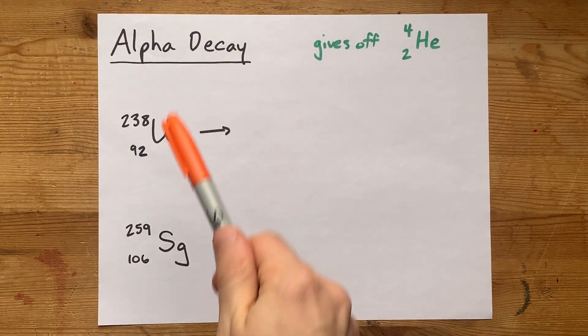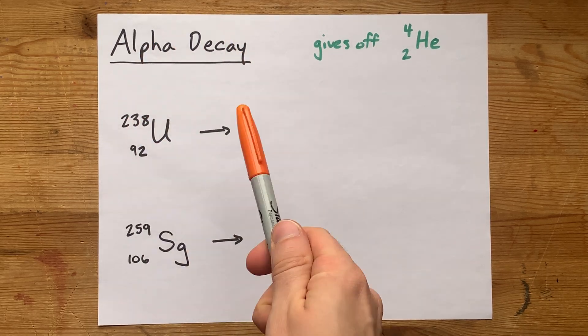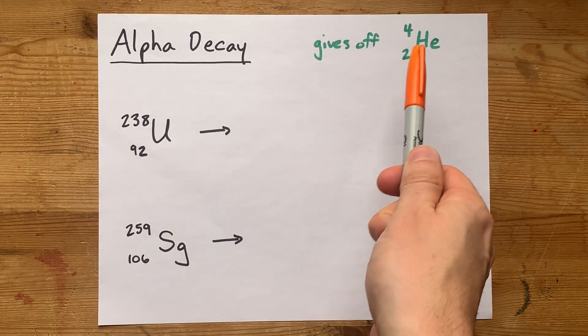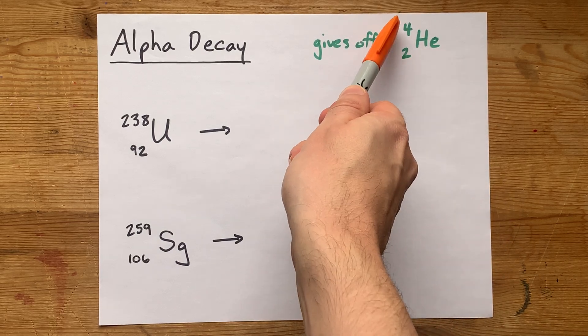Alpha decay is when a radioactive isotope gives off an alpha particle. Alpha particles are helium nuclei. They contain two protons and two neutrons.